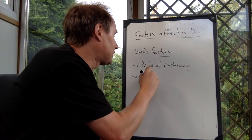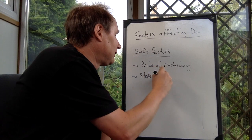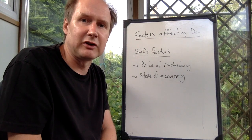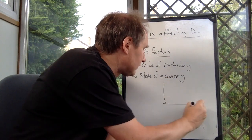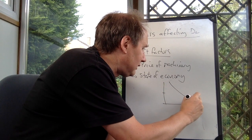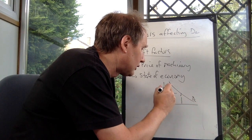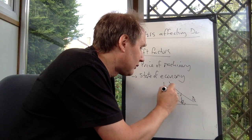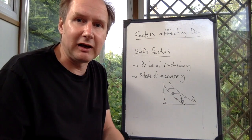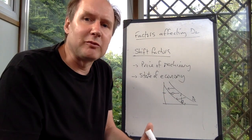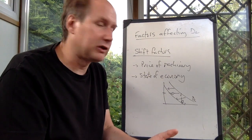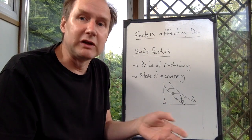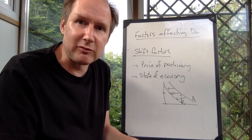Or it could be the state of the economy, because that determines how many workers the firm's actually going to need. In the coronavirus crisis, the demand for labour in restaurants, at a given wage, when the economy's doing well, they demand lots of workers. But during the crisis, nobody's going out to restaurants, therefore firms don't need so many workers, and demand shifts in. So anything that affects firms' willingness and ability to employ workers, that's going to cause a shift in demand. Movements along are caused by wages. Shifts are caused by any factor other than wage.